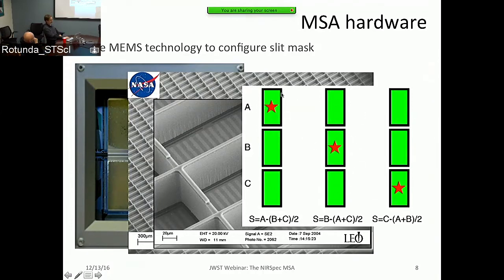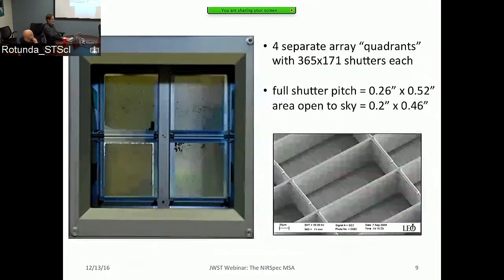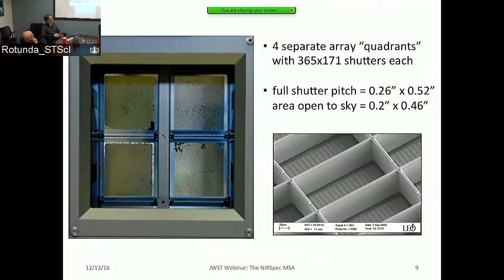Each shutter can be opened and closed as needed to provide slits to observe objects on the sky. One of our default observing strategies is to open shutters in a three-shutter slitlet pattern, where a target is placed in one of the three shutters, the other two are open for background measurement, and the source is nodded between each of the three shutters across three exposures.